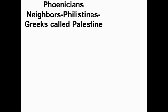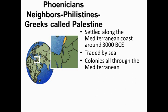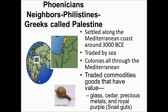The neighbors of the Phoenicians called them the Philistines. The Greeks called them Palestinians and called their homeland Palestine — so yes, they're the Palestinians we talk about today. They settled all along the Mediterranean coast around 3000 BC. What they're most famous for outside of their invention of the alphabet was that they traded by sea, with colonies throughout the Mediterranean. They traded many commodities — goods that have value — including glass, cedar, precious metals, and my favorite, royal purple cloth.